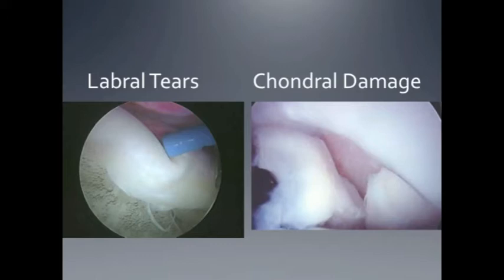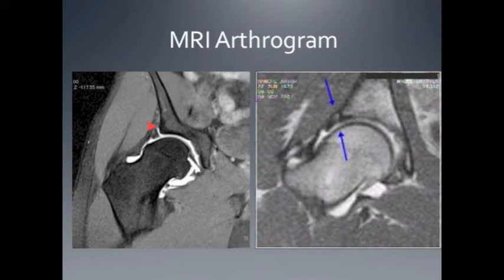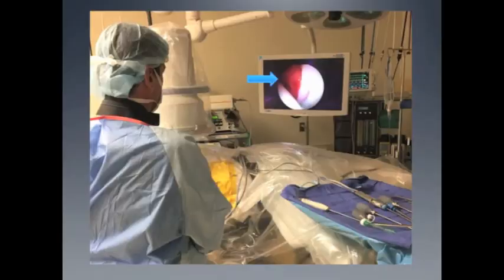The labrum serves an important function in the hip. It helps to distribute load and decrease contact stressors on the articular surface, and provides a seal for the joint. The first step in diagnosing it is an MRI arthrogram, and if a tear is identified, it generally necessitates surgery to repair it. The surgery is performed arthroscopically through small incisions with a camera.